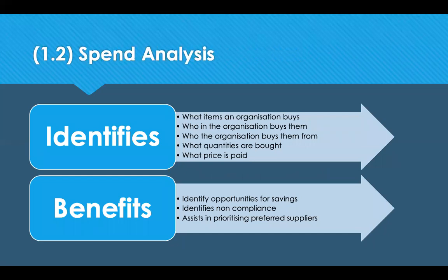The next step is spend analysis — looking internally at what you're buying: what items the organisation buys, who you buy them from, and who within the organisation buys them. You could have multiple people in different divisions buying the same thing at different prices and different brands. Ask what quantities are being bought and what prices are being paid. The benefits include identifying savings opportunities through consolidation or specification standardisation, spotting non-compliance (leakage from corporate contracts), and assisting in prioritising preferred suppliers.